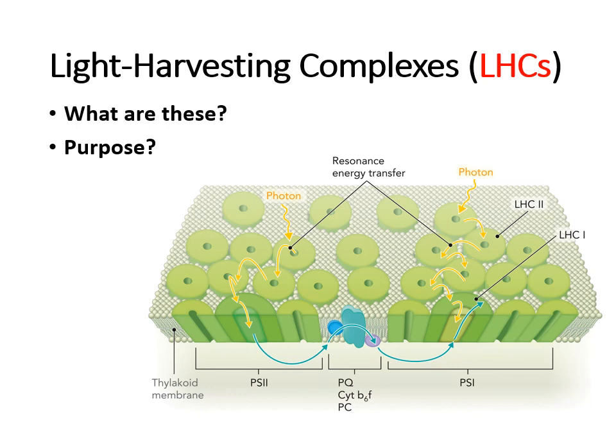When talking about light-dependent reactions, I want to draw your attention to light harvesting complexes, which you can abbreviate as LHCs. These are proteins that have chromophores and participate in the transfer of energy. They are the most abundant proteins found along the thylakoid membrane. Think of them as little solar panels — reaction centers that capture and collect light energy to be used by the photosystems in the light reactions.